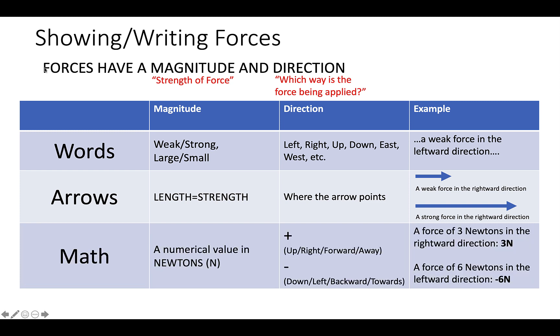There's also the mathematical approach to writing forces. We show the magnitude as a numerical value, measured in a unit called newtons. When we're referring to forces, we'll say five newtons or three newtons or one newton. For direction, we use the plus and minus symbols like we have been doing with other vector values, and the meanings will be determined by whoever is setting up the reference frame.